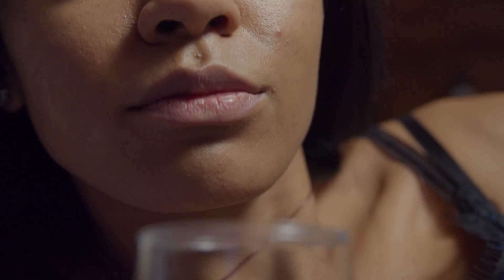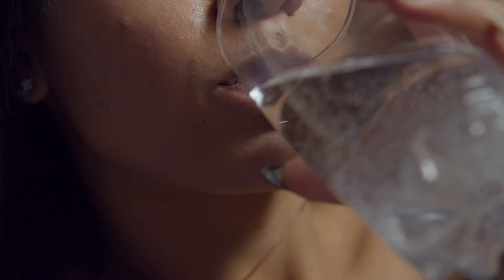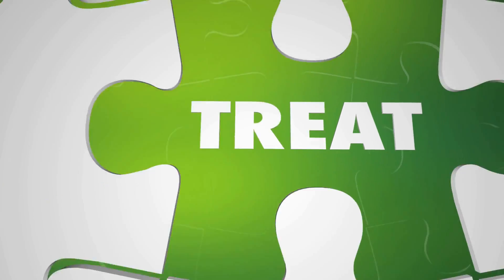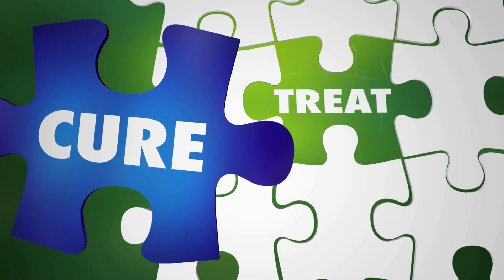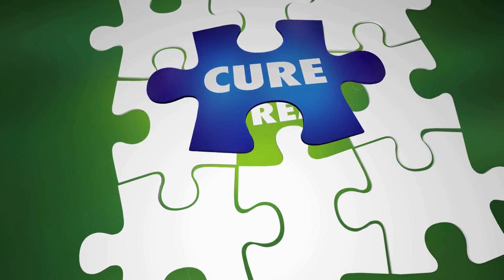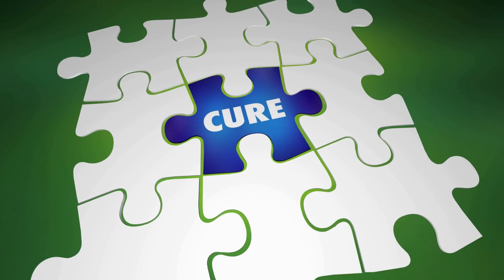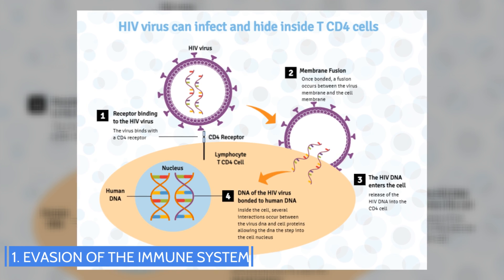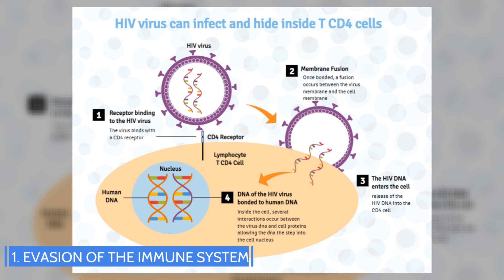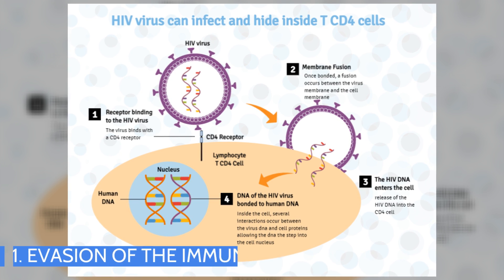Stopping antiviral therapy results in viral load rebound and negative health consequences. But why has HIV been so difficult to cure? One of the reasons is because of its uncanny ability to evade medications by hiding inside certain cells of the immune system.